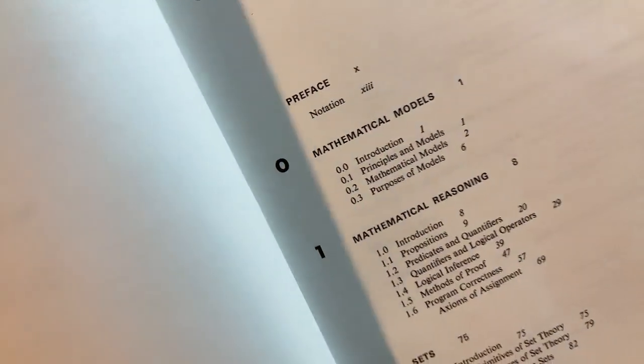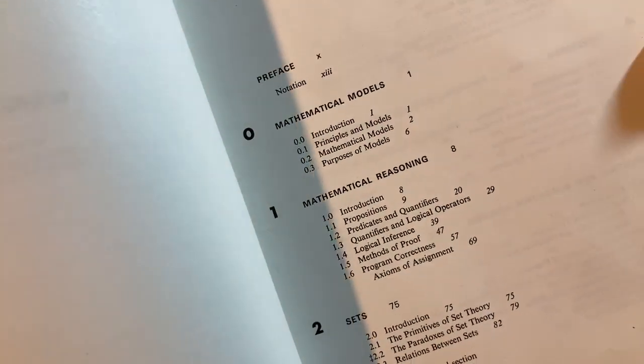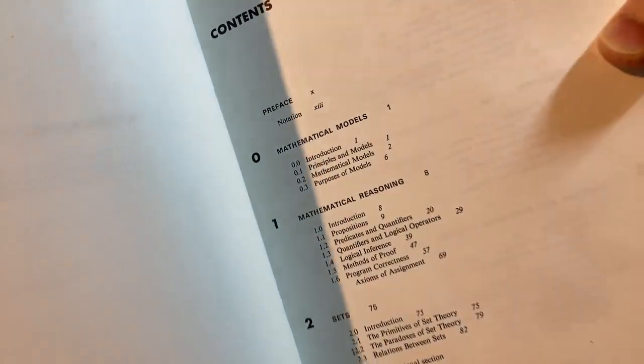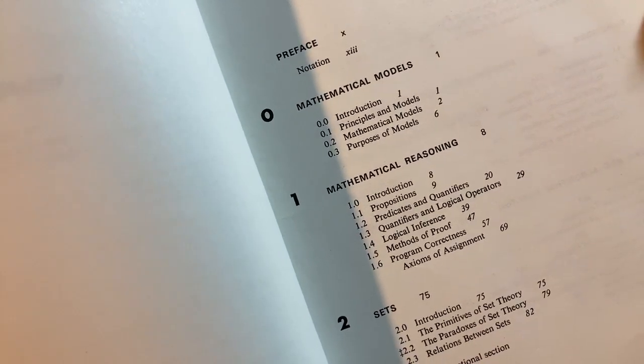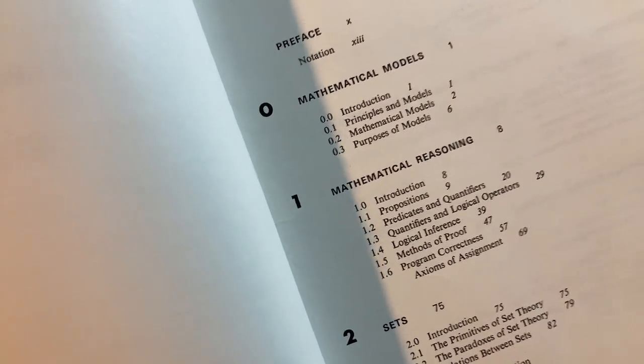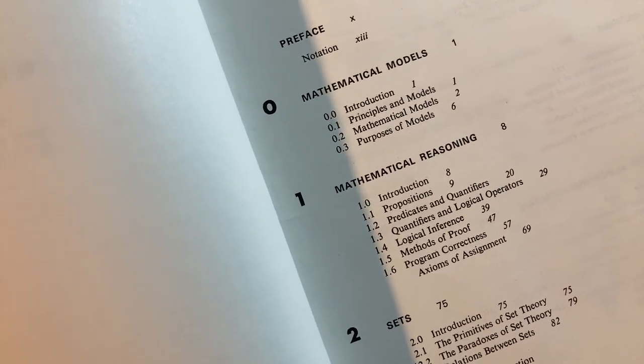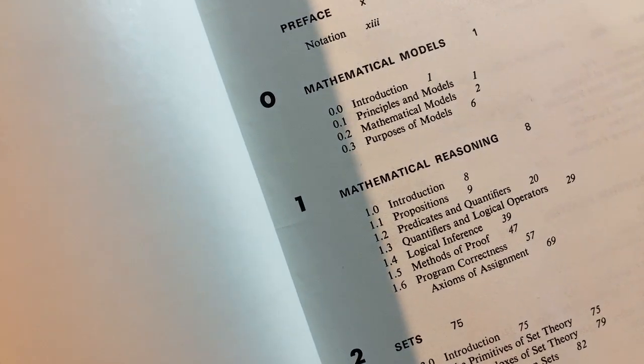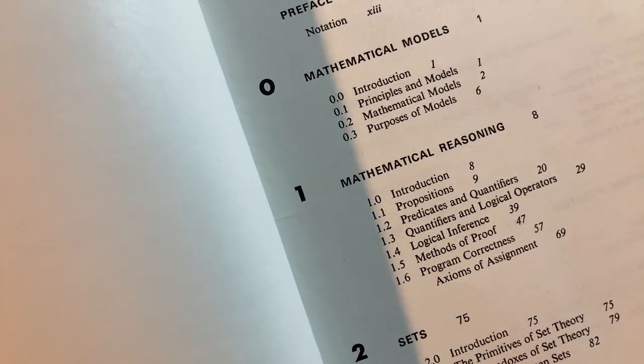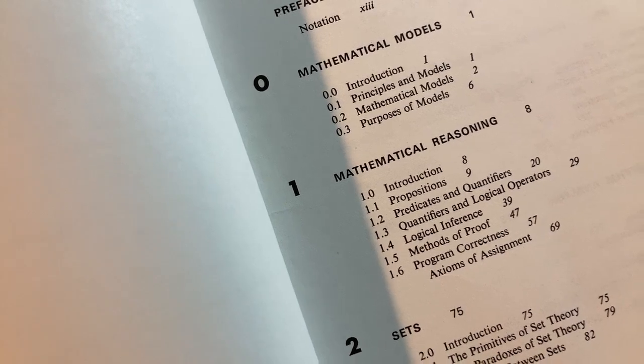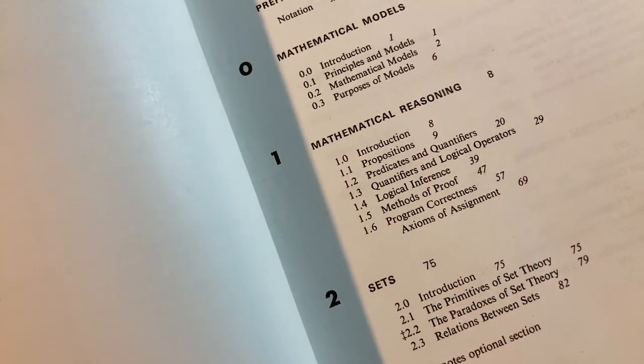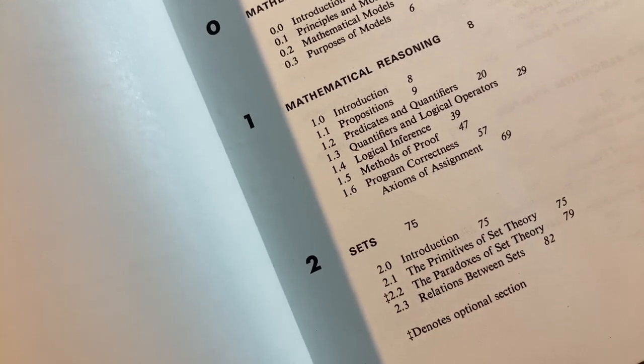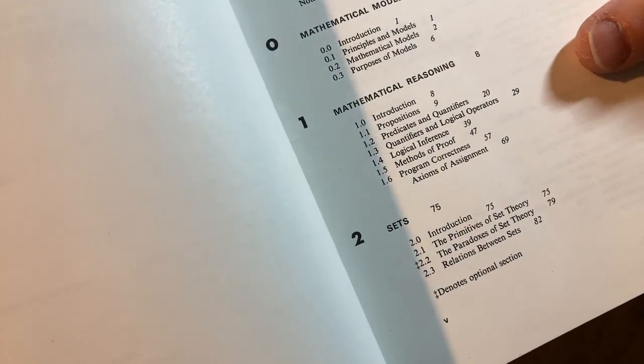Mathematical Models. So the prereq for a book like this, if you wanted to read it for self-study, is just motivation, because it starts from the very beginning. Mathematical Models, Introduction Principles, Models, Purposes of Models, and Mathematical Reasoning. So that's really basic stuff. Sets, also pretty basic, but you could probably start with Mathematical Reasoning and go from there.